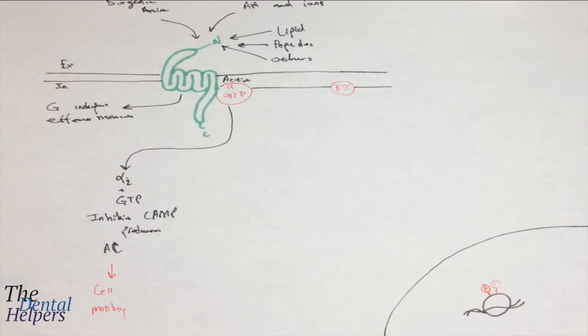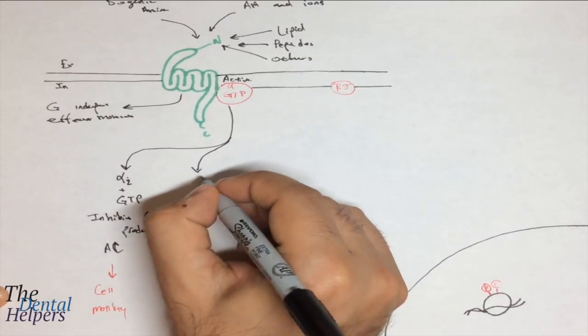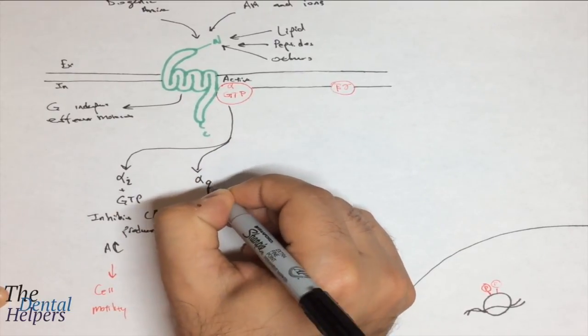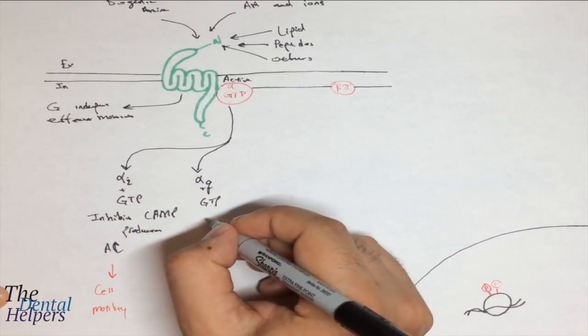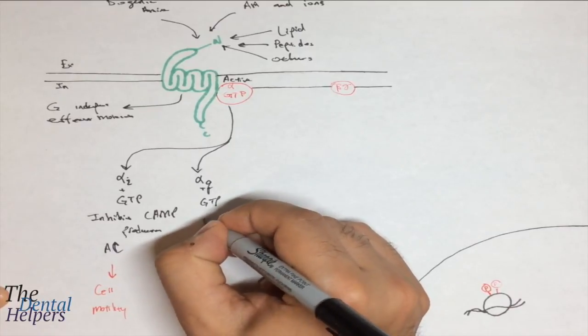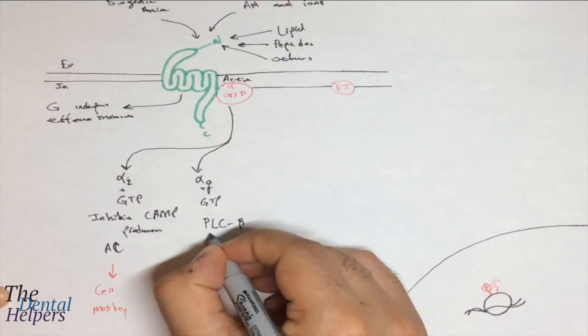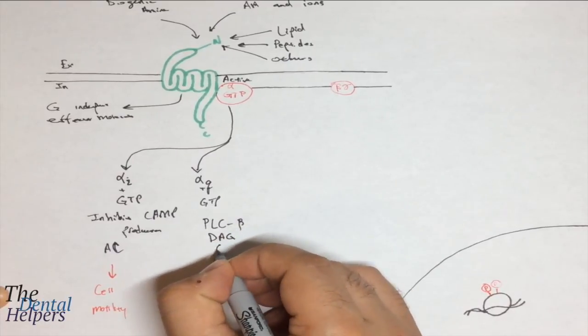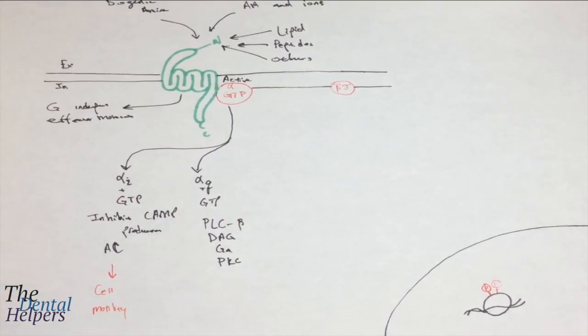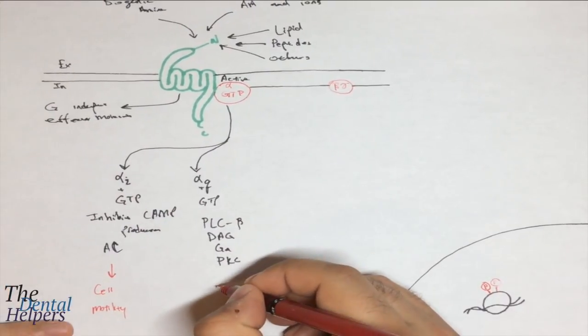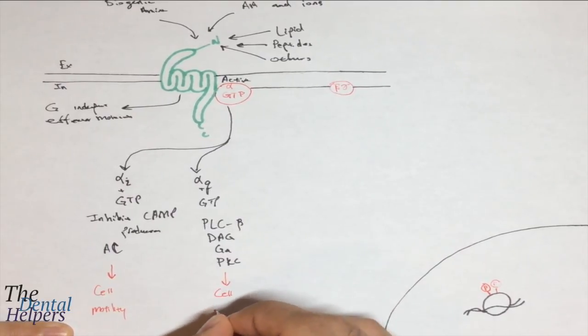The next route we can take is alpha Q. This is going to be involved with phospholipase C beta, DAG, calcium, and PKC. The result is cell proliferation.